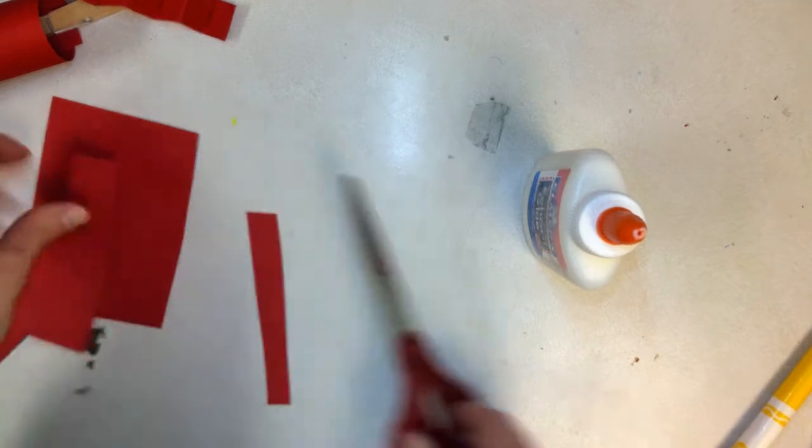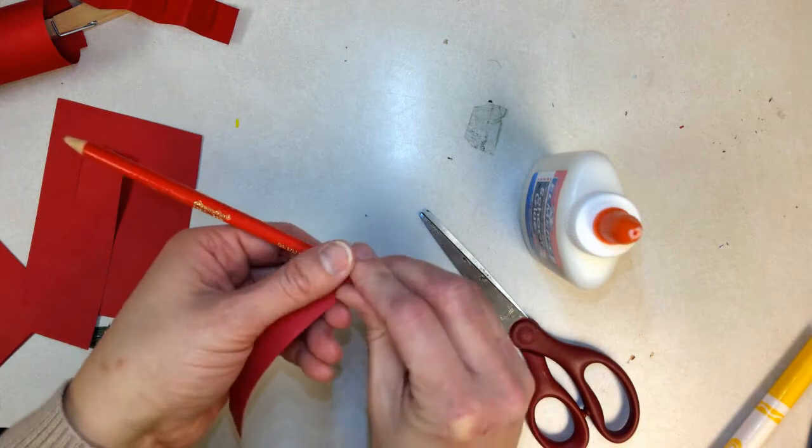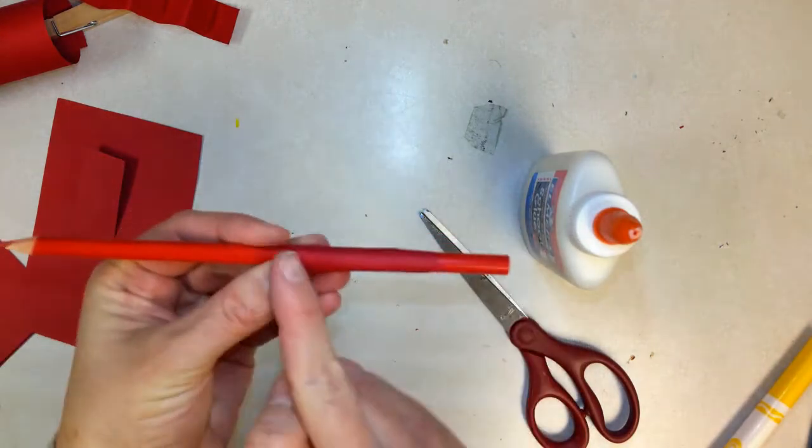For seaweed that's curly, I could take a strip and a pencil and wrap it around the pencil like this.